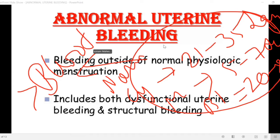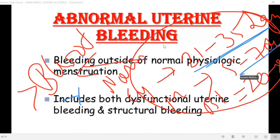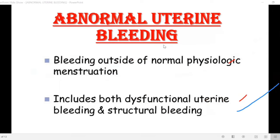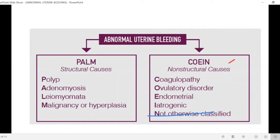For example, if the cycle is less than 21 days or the blood loss is more than 80 ml, that is considered abnormal uterine bleeding. This condition is classified using the PALM-COEIN system, which is divided into structural causes and non-structural causes.